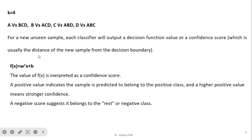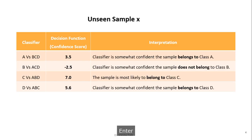The SVM equation is w·x + b. The value f(x) is interpreted as a confidence score. A positive value indicates the sample is predicted to belong to the positive class, and a higher positive value means stronger confidence. Negative scores suggest it belongs to the rest of the negative class.